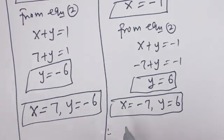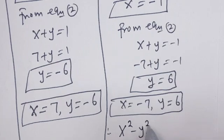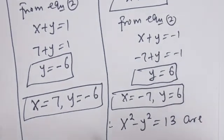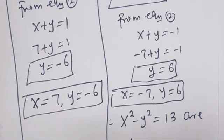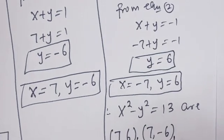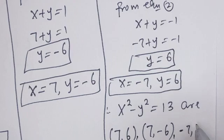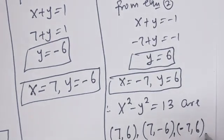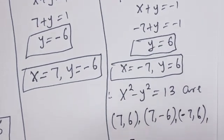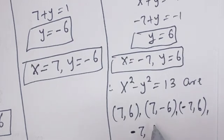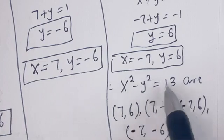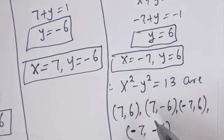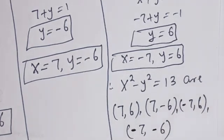Therefore, the integer solutions for this problem — x squared minus y squared is equal to 13 — are: (7, 6), (7, -6), (-7, 6), and (-7, -6). These are the integer solutions for this equation. I hope you enjoyed the video. Thank you for watching. Please don't forget to like, share, comment, and subscribe to my channel. Bye.